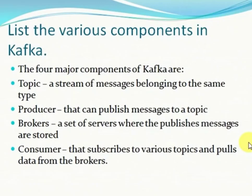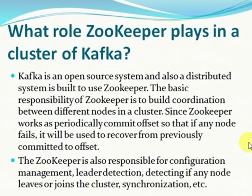There are four major components in Kafka. First, we need to create a topic - for example, if you have an order microservice, the topic name would be 'order'. Second, producers publish the data. Third, the broker is a mediator - a set of servers where messages are published. Fourth, consumers take the data - for example, a notification microservice consuming data produced by an order microservice.